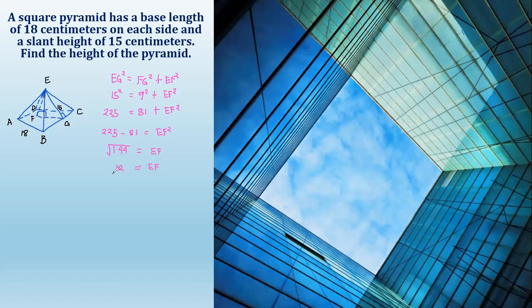The alternative solution is like this: height equals the square root of slant height squared minus the base squared. The base squared, which is half of 18, the base length, is 9 squared. So 15 squared is 225 minus 9 squared, which is 81. So 225 minus 81 is 144. Square root of 144 equals 12 cm. Same result.